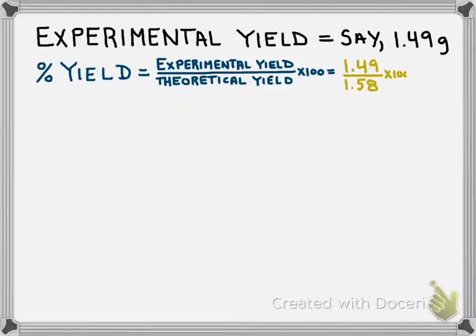Then we're going to calculate the percent yield. That's the experimental yield, or the actual yield, divided by the theoretical yield, times 100 to make it a percent, and that comes out to be 93.9%, which would be a pretty darn good percent yield, and that's a fair amount of silver.